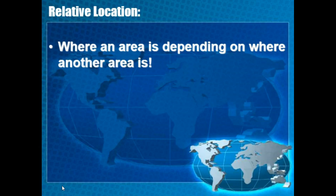Relative location means where an area is depending on where another is. For example, if I said I live two blocks away from Eastwood High School, that's relative location — I'm explaining where one place is based on another area. Do you live two blocks from the Burger King? Behind Chico's Tacos? Right by the mall? Those are examples of relative location. Absolute is exact; relative uses some other place to help describe where something is.